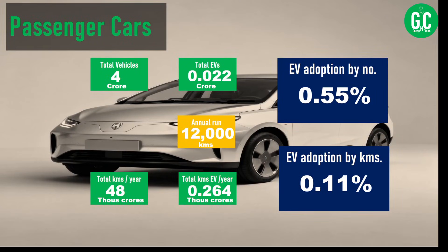For passenger cars, the numbers look dismal. There are 4 crore cars in India, of which around 2 lakh are EVs, making the EV adoption rate just 0.55% by number. This is the total number of cars, not cars sold in a particular year — if you consider only recent sales, the rate is slightly higher. Considering passenger cars running 12,000 kilometers annually, the EV adoption rate by kilometers is just 0.11%.